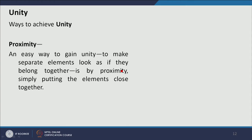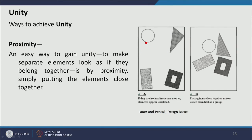One way to achieve unity is proximity. An easy way to gain unity is to make separate elements look as if they belong together. If we arrange different shapes and visual elements together, they look unified. In composition A, different elements all have different color and texture and are not together. In composition B they are placed in closer proximity, so we perceive the circle, rectangle, triangle, and these four things together as a combined one.